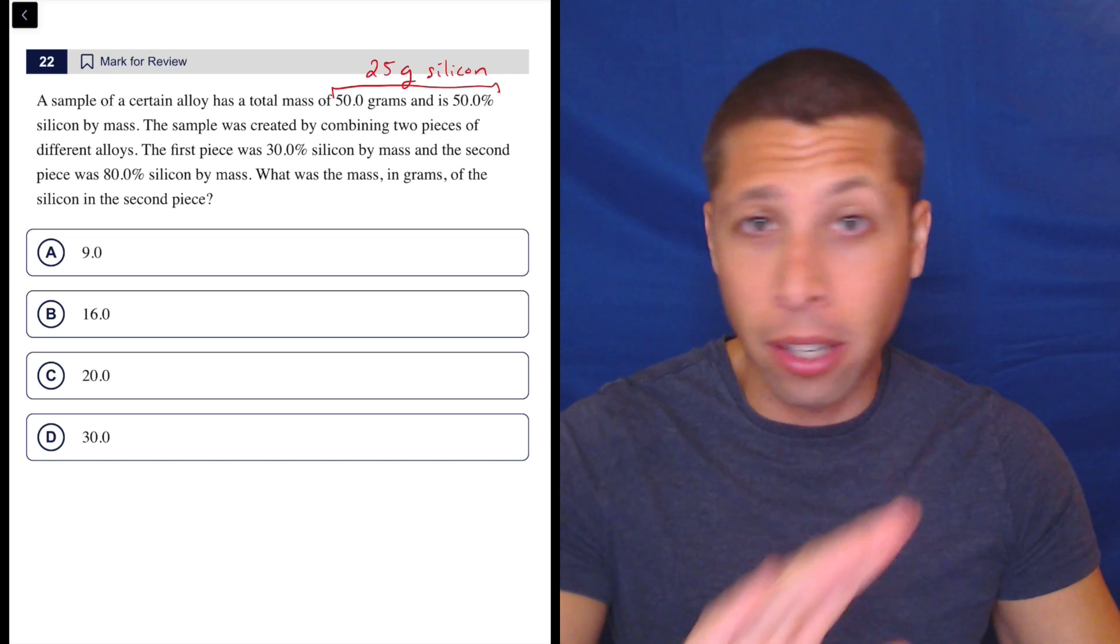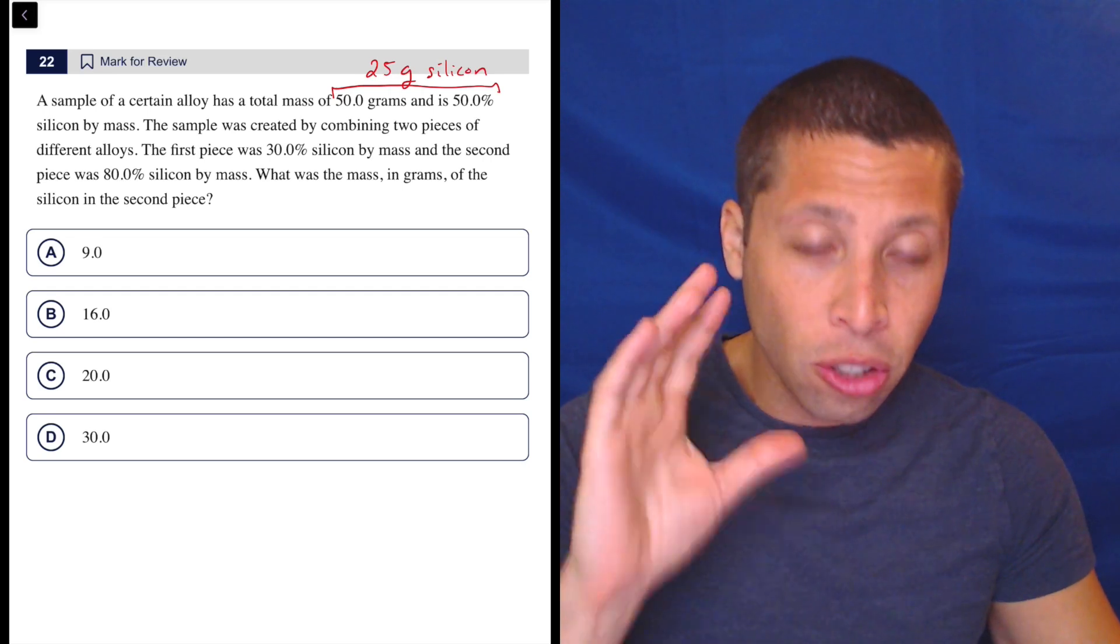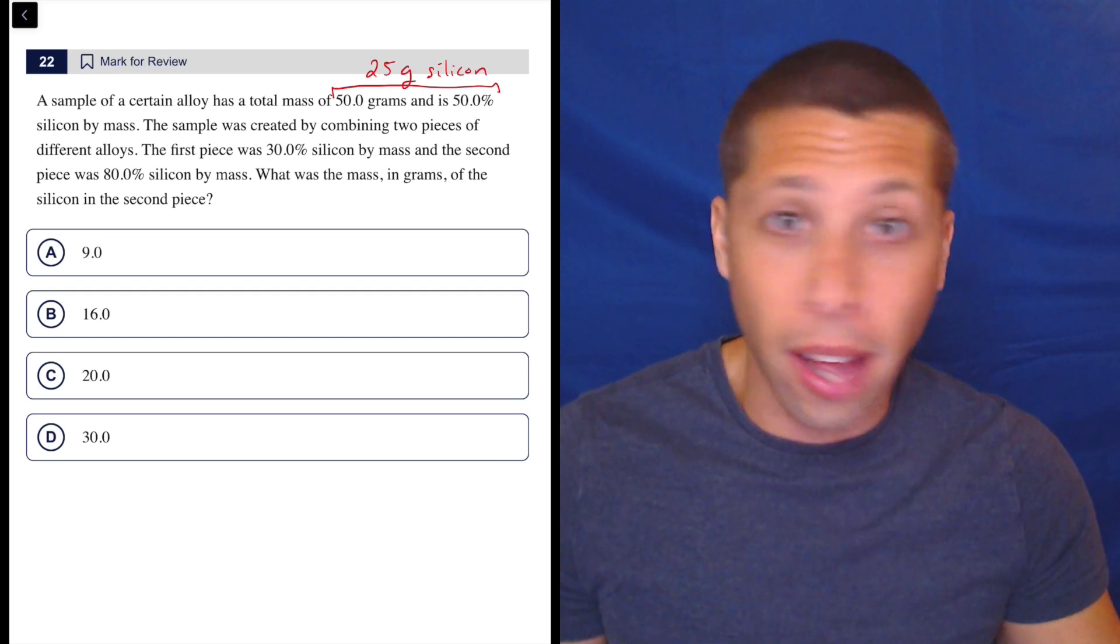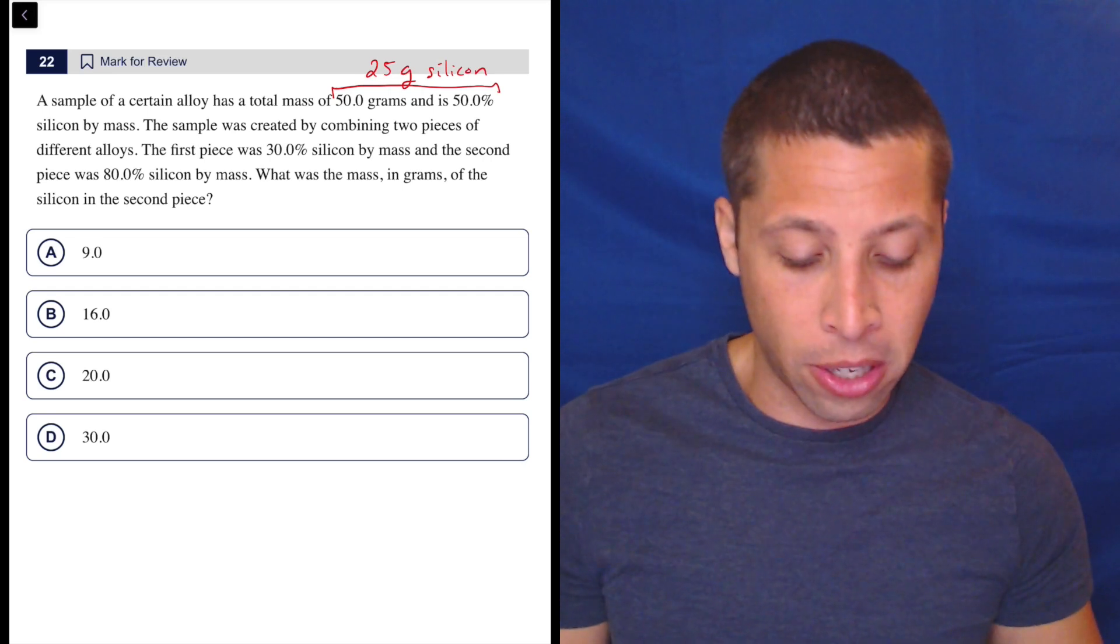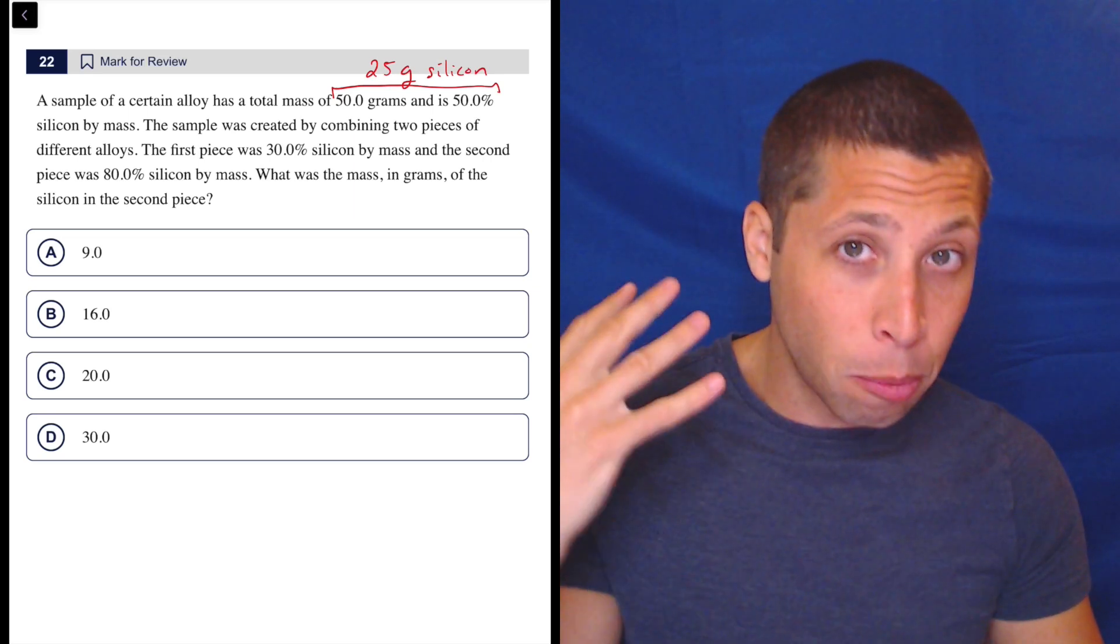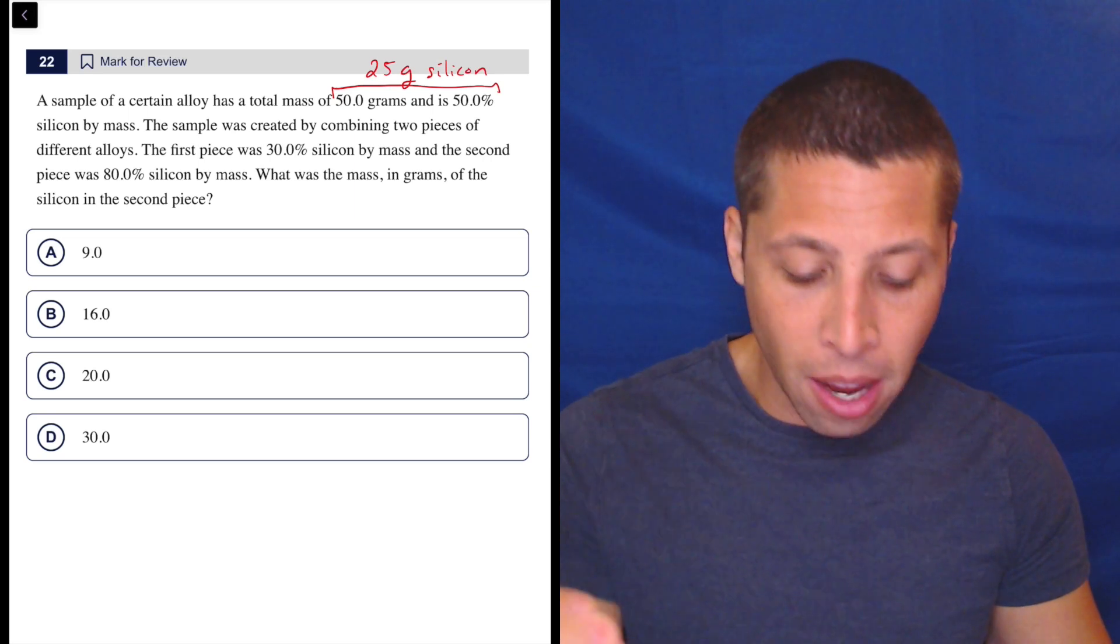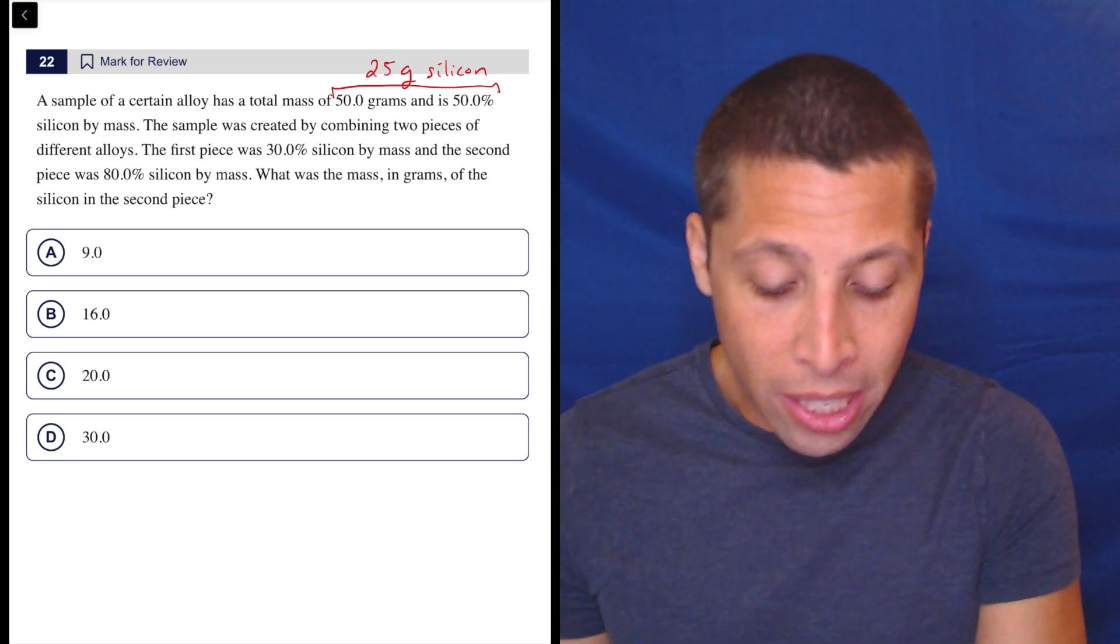Again, there's an equation we can build here. I will show you it at the end, but let's assume you're reading that and you're just like, oh God, this is too much. What can we do? Well, we have answer choices here. So there are only four possible values for the mass of the second piece. So we can guess and check here.